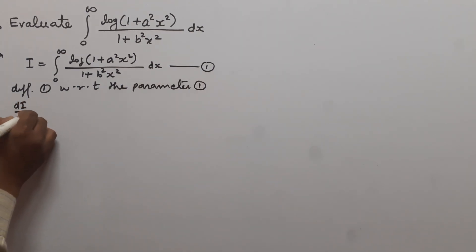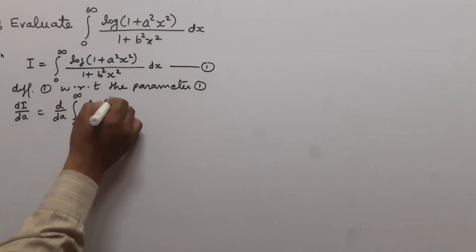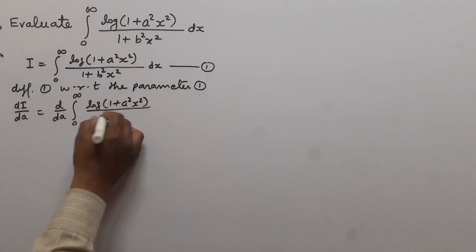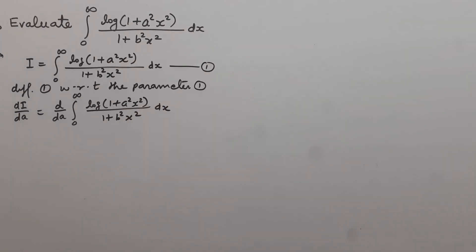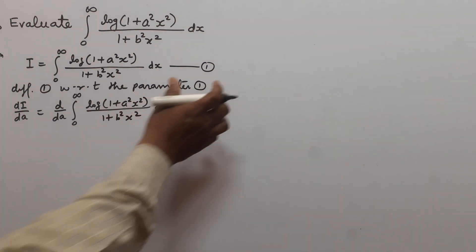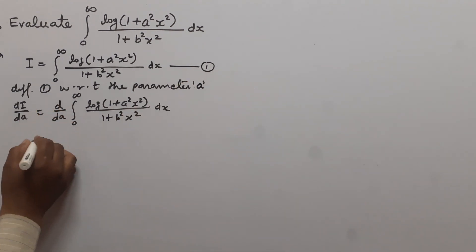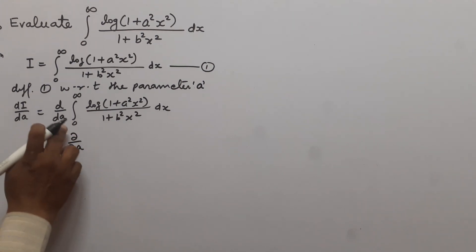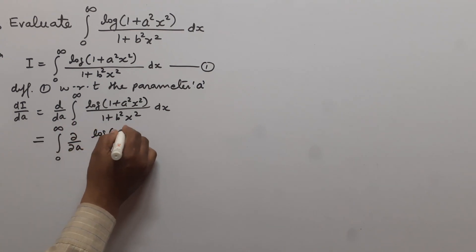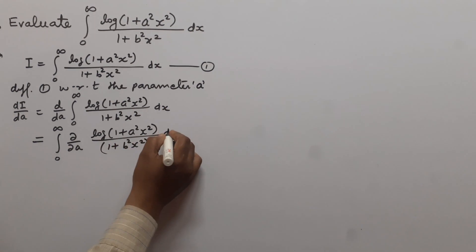We get dI/da, this is equal to d/da of the integral from 0 to infinity of log(1 + a²x²) divided by (1 + b²x²) dx. Here we differentiate both sides with respect to the parameter a. This ordinary differentiation d/da goes inside the integral sign, converting to the partial derivative ∂/∂a of log(1 + a²x²) divided by (1 + b²x²) dx.